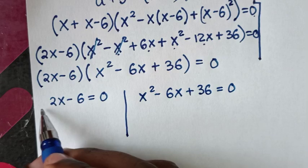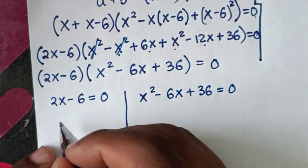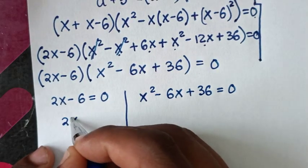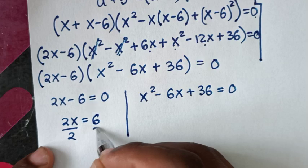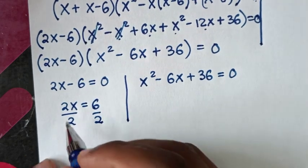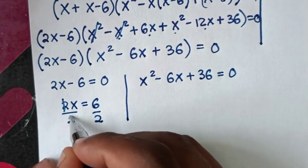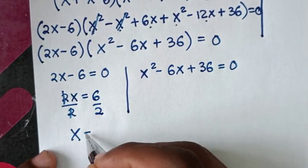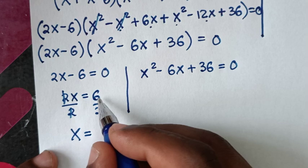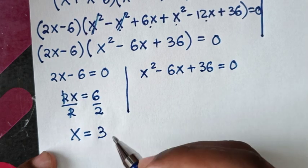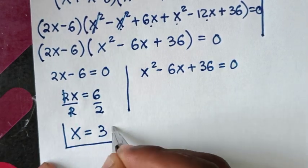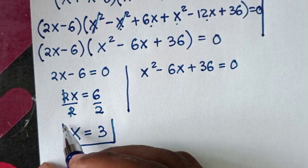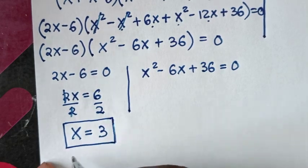From the first sub-solution, 2x minus 6 equals 0: moving 6 to the other side gives 2x equals 6, dividing both sides by 2 gives x equals 3. So the first value of x is 3, which is the real solution.